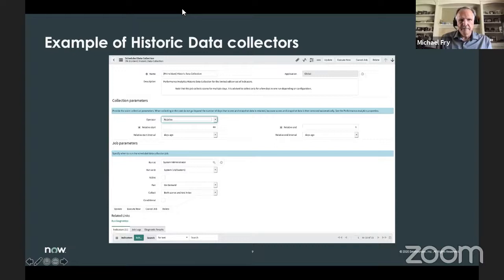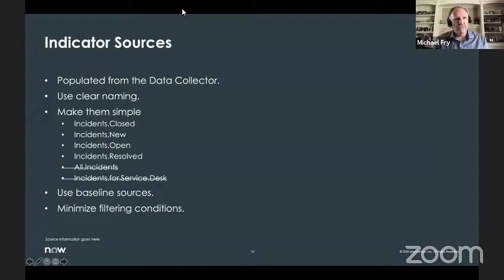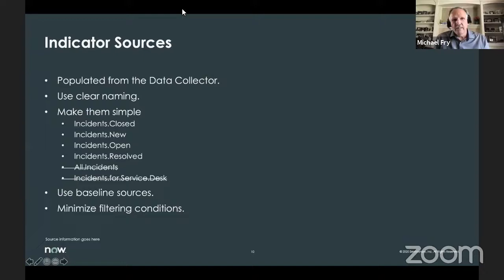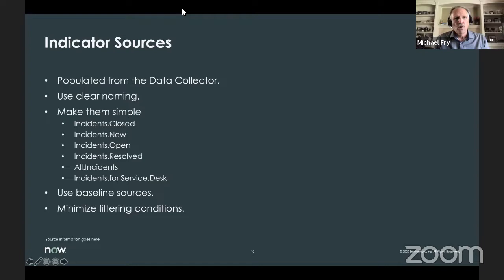Indicator sources are populated from the data collector. Make them very simple and use clear naming — I've created data sources where I completely forgot what I was collecting. Some that come out of the box: incidents closed, incidents new, incidents open, incidents resolved. Don't create sources named vaguely like 'all incidents,' and don't create them specifically for a department. We don't need indicator sources for a specific department — that's what breakdowns are for. Use the baseline sources if possible and minimize filtering.